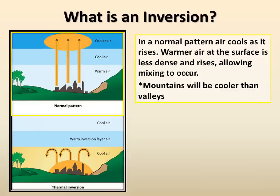In a normal pattern, the air at the surface is warmer than the air aloft. For example, the mountains are typically cooler than the valleys. Since the warm air is less dense than the cooler air, it rises and allows for mixing to occur.